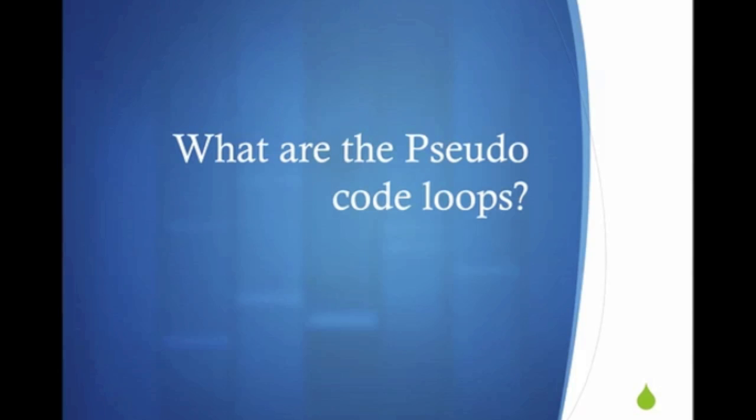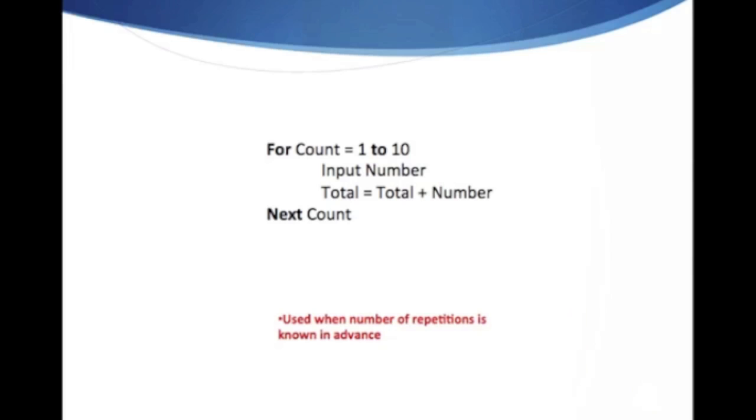There are three loops which you will need to know, which carry out different processes. The first loop you'll need to know is for-to-next, which is used when the number of repetitions is known in advance. Take a look at this example: for count equals one to ten, input number, total equals total plus number, next count.